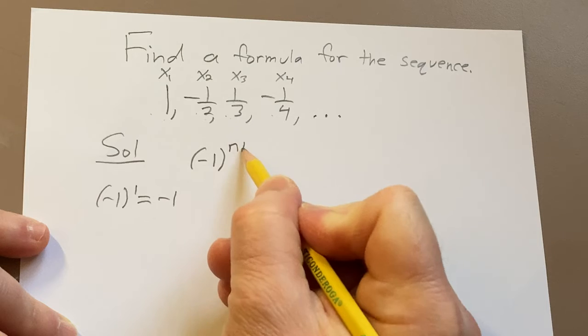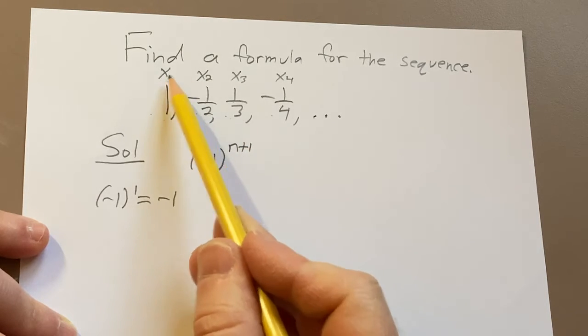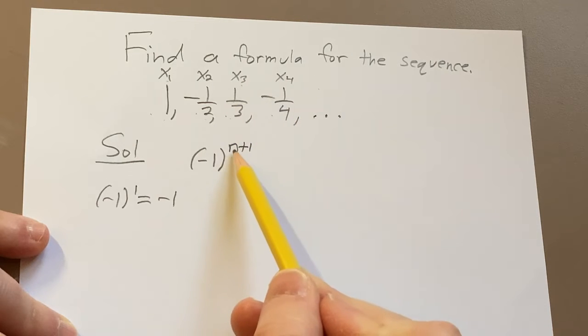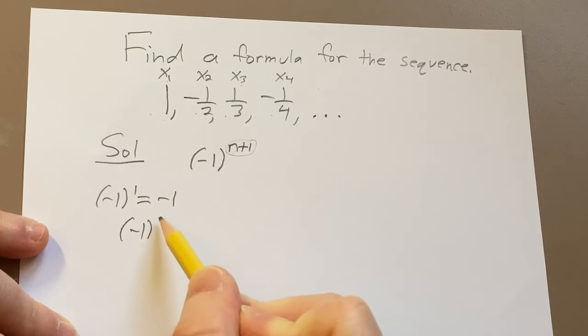So what we can do is we can put a plus one here and that will ensure that whenever we plug in an odd number like one, three, or five, which is not listed, we're going to get an even exponent and negative one to an even number is equal to one.